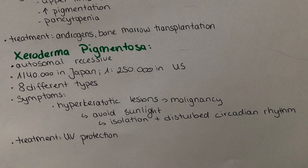This disease has eight different types affecting different genes on different chromosomes. There is no treatment so far, so patients must wear UV protection in the form of long clothes, sunglasses, tinted windows, and similar measures. NASA even developed a suit similar to astronaut suits to keep these patients safe from sunlight. Often the circadian rhythm changes drastically for affected individuals, which can lead to isolation, depression, and vitamin D deficiency. Close observation by experts and regular screening for skin malignancy are essential.